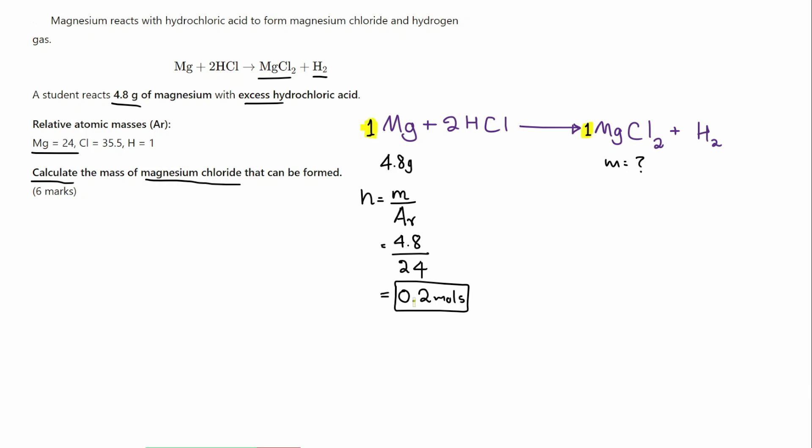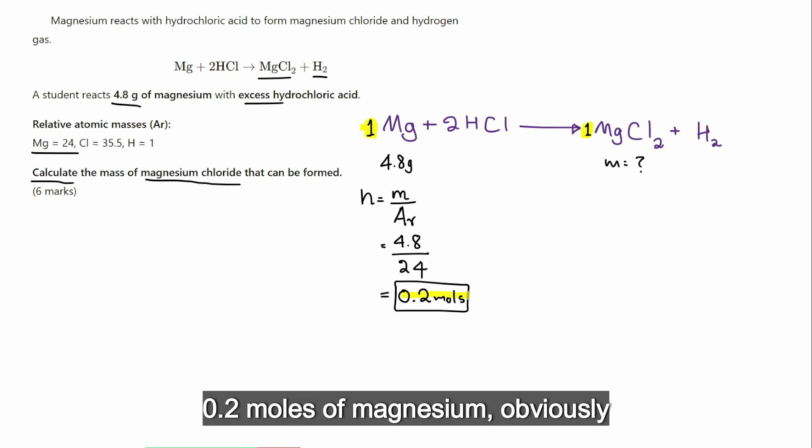So, when you have 0.2 moles of magnesium, obviously, we can definitely tell the number of moles of magnesium chloride formed will also be 0.2 moles.